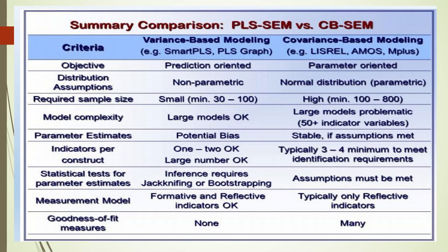If I talk about measurement model, it can work on formative and reflective both, while in case of covariance it can only work on reflective. Goodness of fit: it means that we are having many indicators or rather many statistics are there in case of CB-SEM to test the goodness of fit. Here we have none.